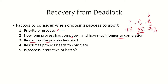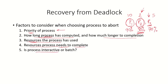Also, how many resources a process needs to complete — if a process requires more resources, that process should be terminated first. For example, if P1 requires 10 resources, P2 requires 2 resources and P3 requires 5 resources, since P2 is requiring less number of resources it makes sense to let P2 exist and terminate P1. So all of these factors — priority, how much it has computed, the resources it has used, and the resources it needs — all contribute to choosing which process has to be terminated. Another factor is whether the process is interactive or a batch process; if it is an interactive process it will be given higher priority and not be terminated compared to a batch process.